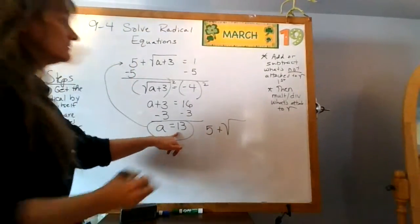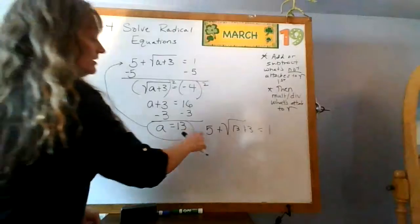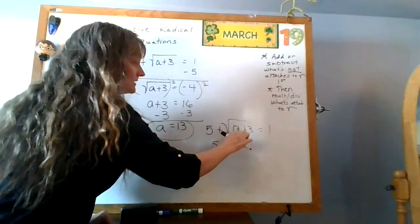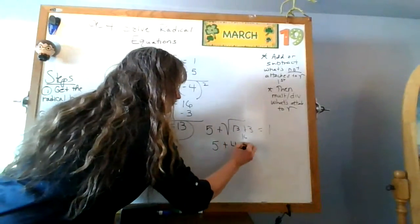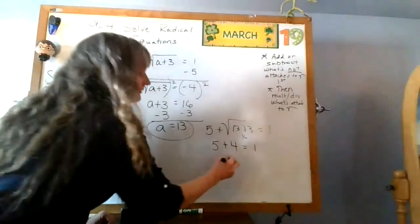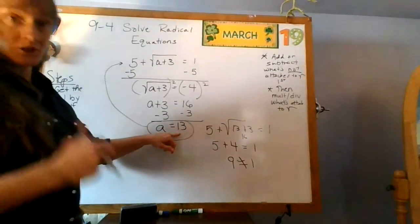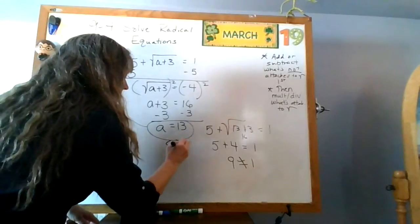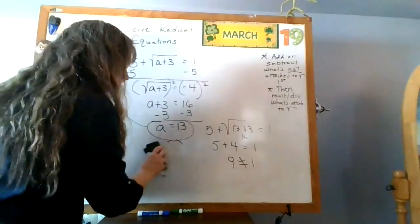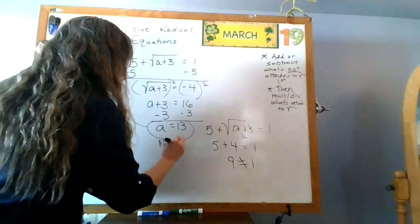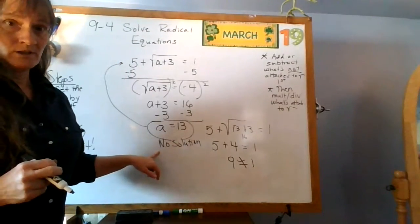Now I isolate the variable: subtract three from both sides, and I get a equals thirteen. That's my answer — I'll write it down. Now I check: five plus the square root of thirteen plus three equals one. Thirteen plus three is sixteen, so I get five plus the square root of sixteen equals one — the square root of sixteen is four. Five plus four equals one? Nine does not equal one. So a equals thirteen is an extraneous answer — I'll write 'empty set' or 'no solution' next to it.